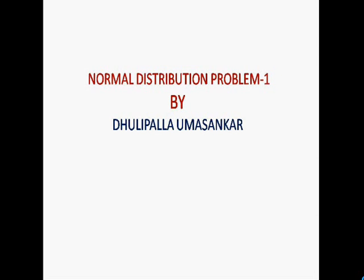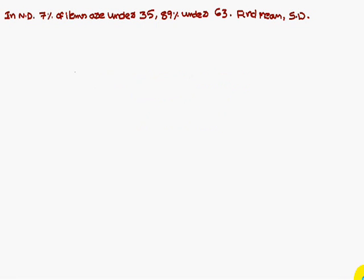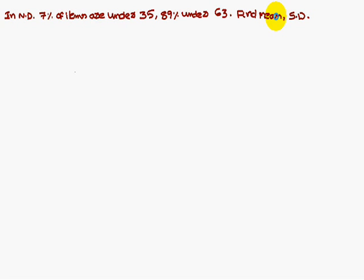Today we are going to discuss a normal distribution problem. In a normal distribution, what is given is that 7% of the items are under 35 and 89% are under 63. Find the mean and standard deviation — that means you have to find out the mu value and sigma value.